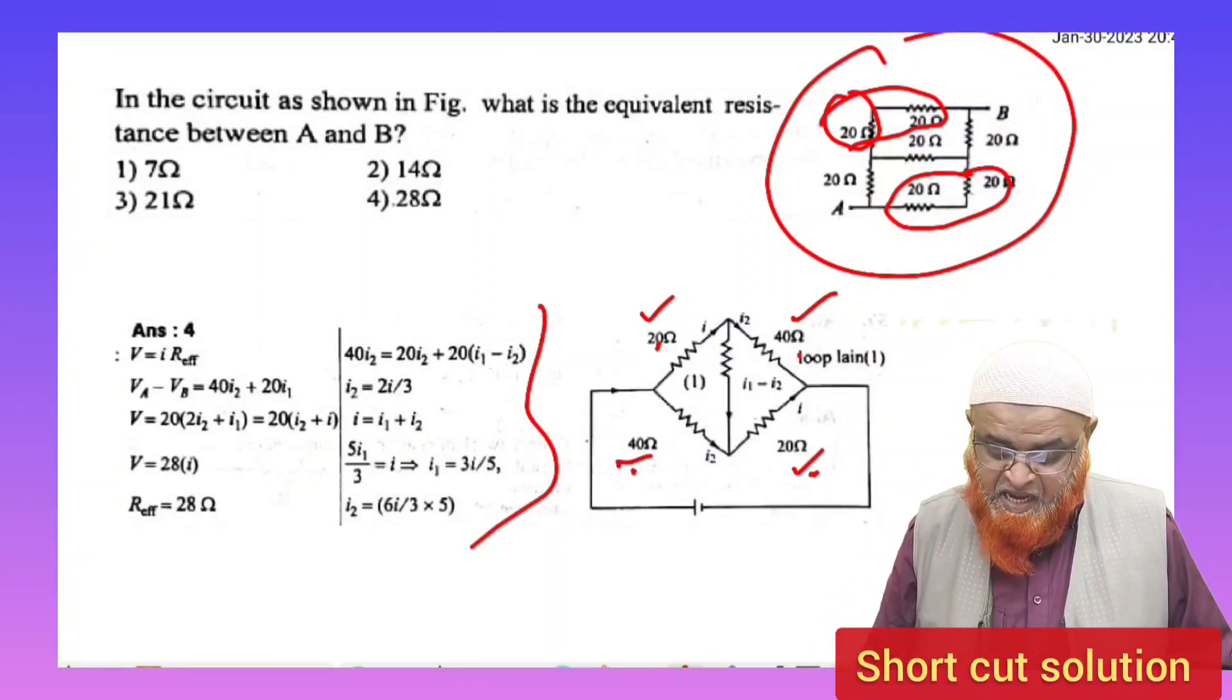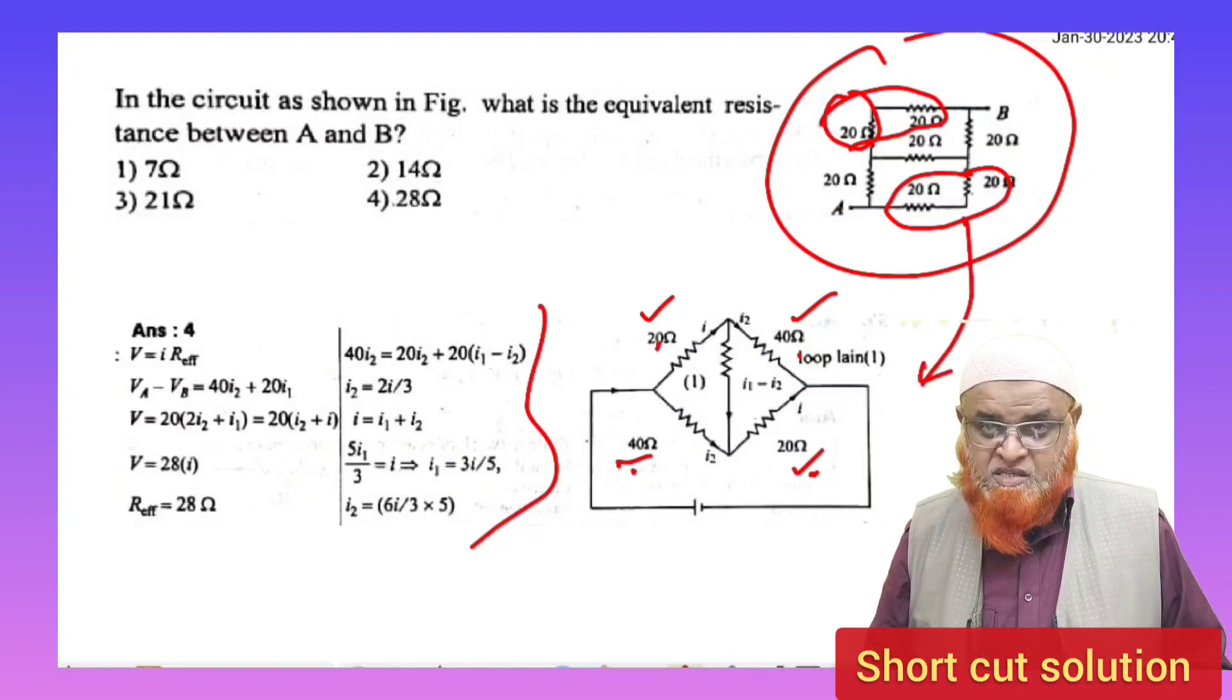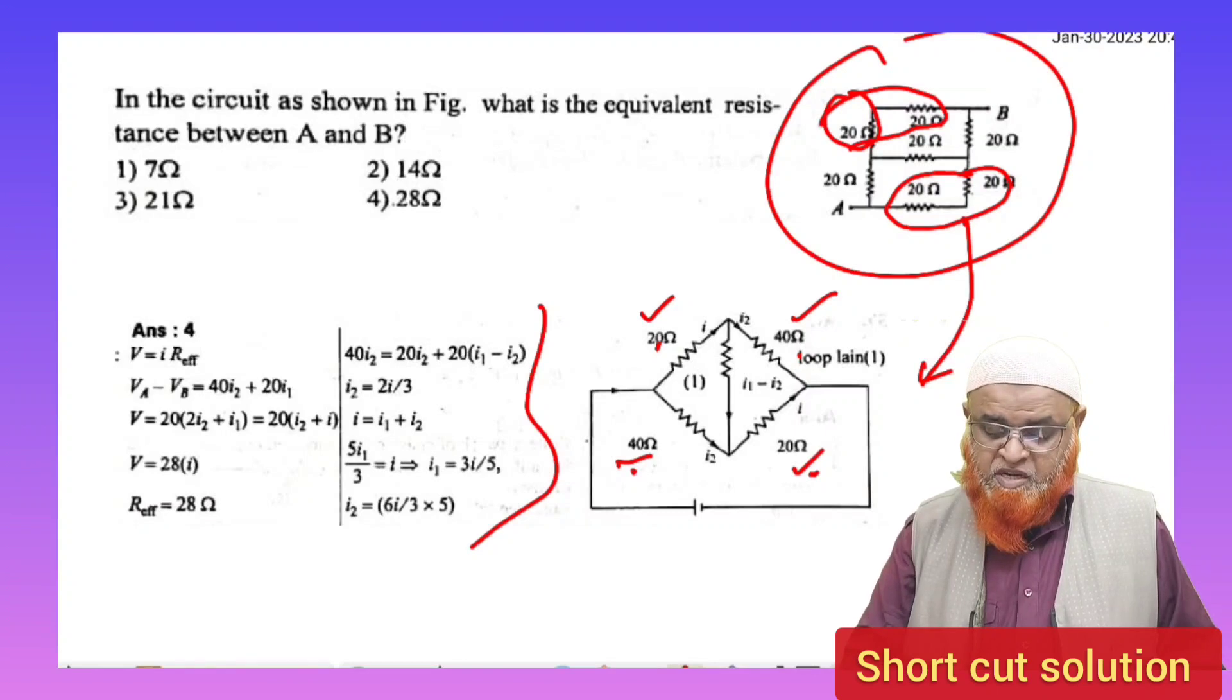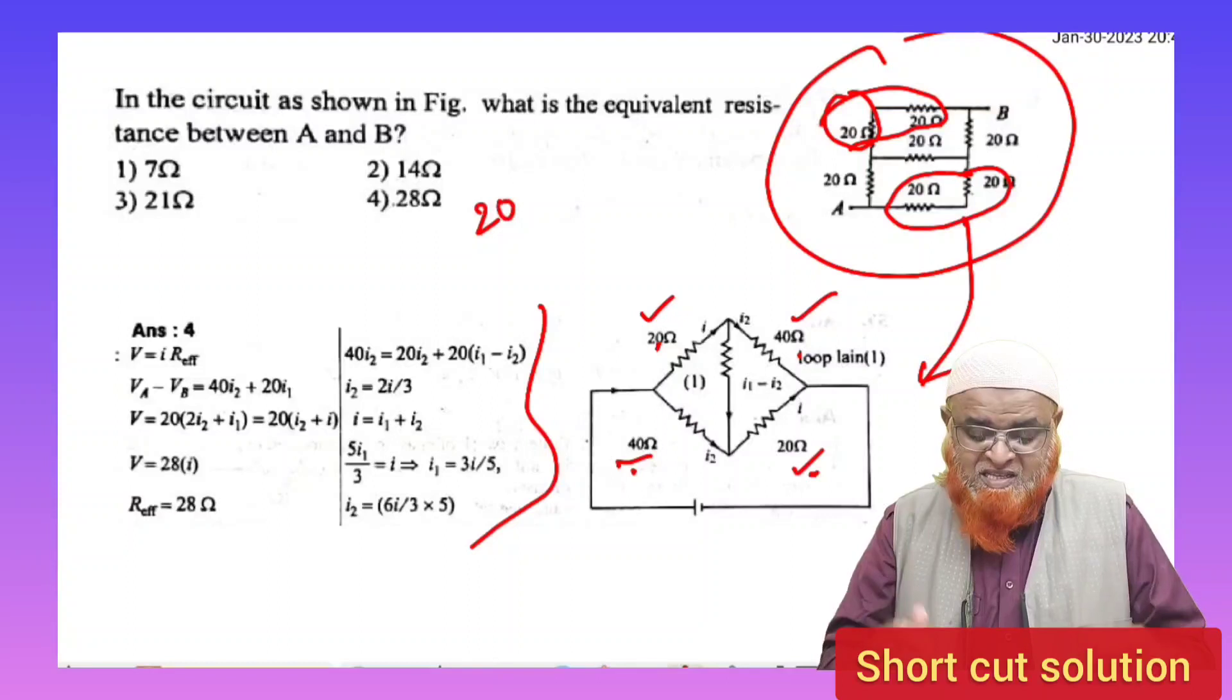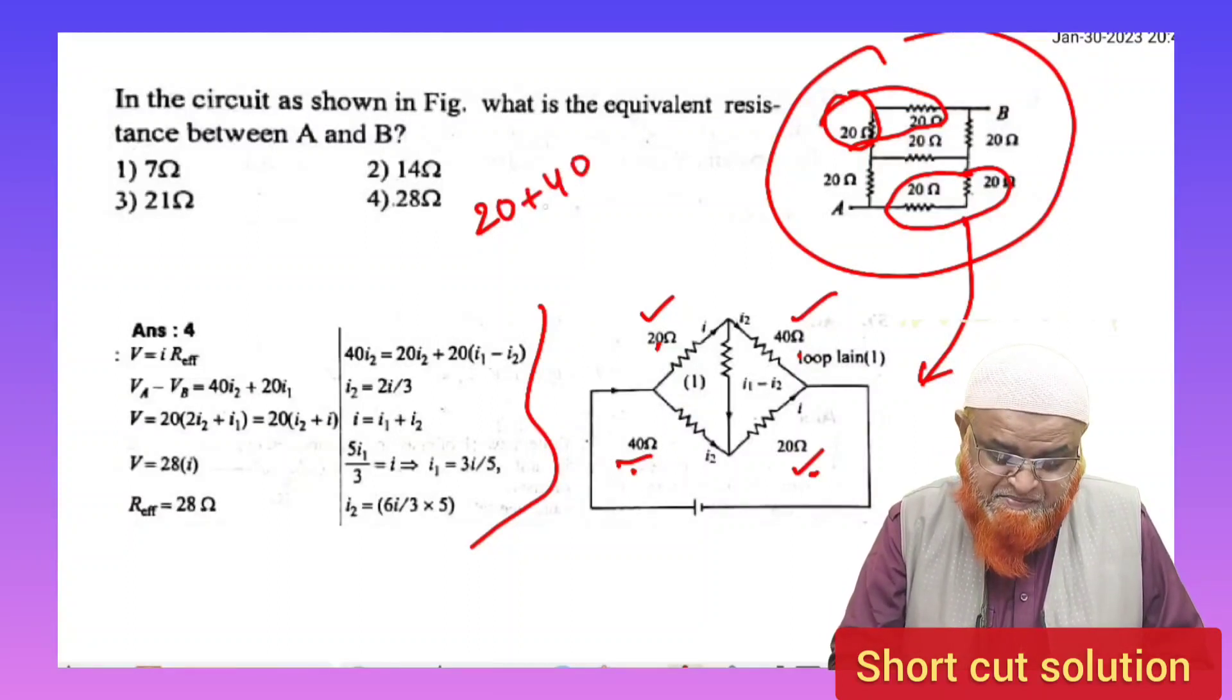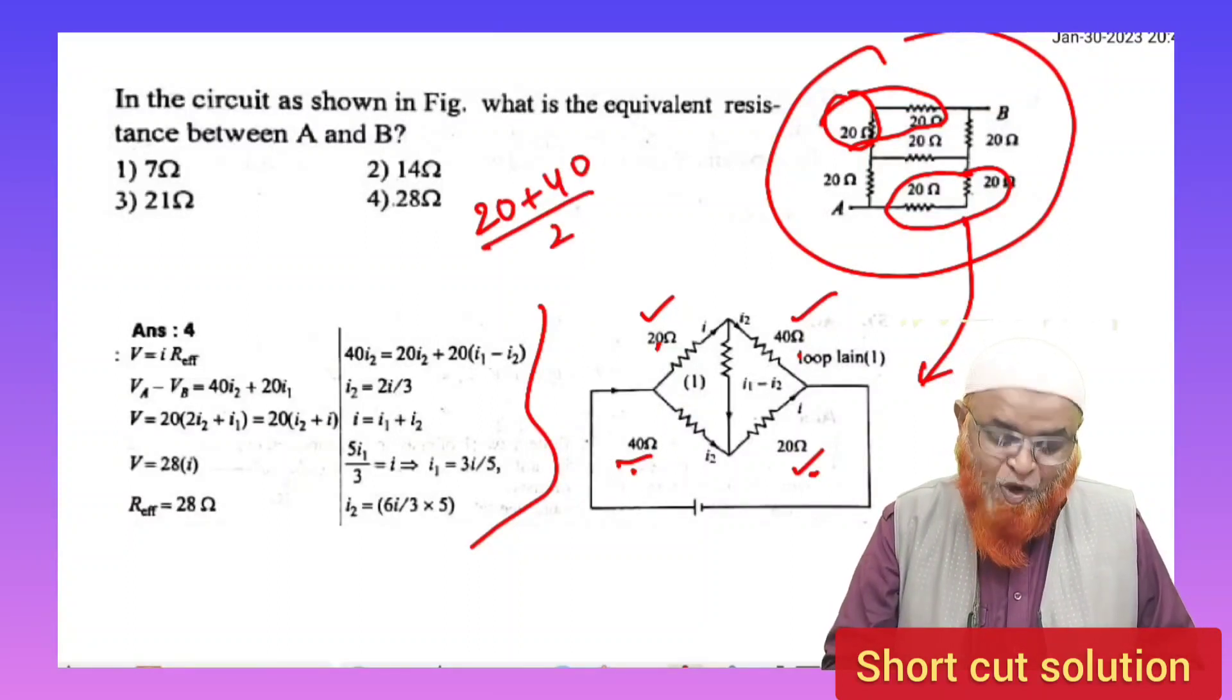So as this is 20 and this is 40, and this is 40 and this is 20, this is a modified circuit of this Wheatstone bridge given in the diagram here. Just you have to do is take 20, add with 40.